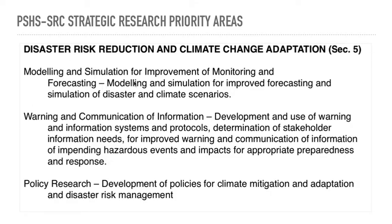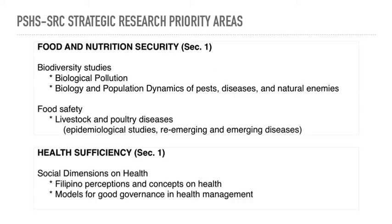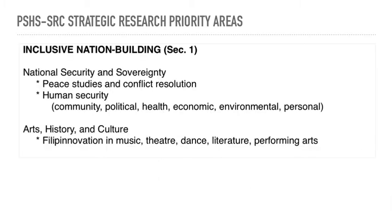Modeling, simulation, and improvement — biodiversity studies — more on population genetics if you're interested in that. For example, if you want to map the genetic variation of Sardinella longisseps in one area and sardines in another area, that can be an example of biodiversity studies. Food stock, food safety, livestock and poultry diseases. Social dimensions and health — the social aspect of research. If you have ideas and think you can make a research topic out of anything here, even if I didn't mention it, please let me know.